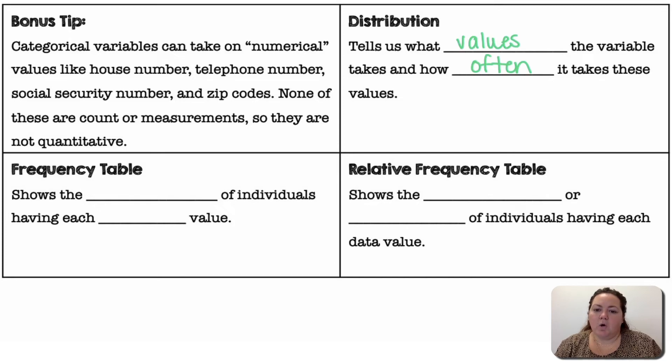Distribution tells us what values the variable takes and how often it takes those values. A frequency table shows the number of individuals having each data value, so it's like the count, how many times did this occur. Relative frequency table shows the proportion or percent of individuals having each data value. So relative frequency is when we change that over to percentages.